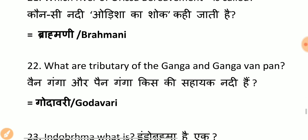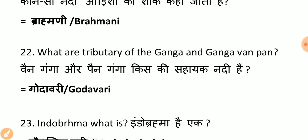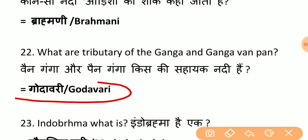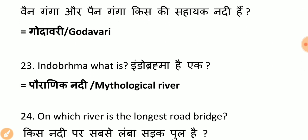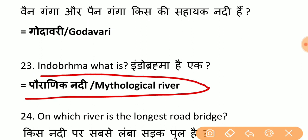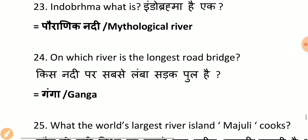What are the tributaries of Ganga? Pen Ganga — which river's tributary is it? Remember: Pen Ganga is a tributary of Godavari. People get confused thinking it may be Ganga's tributary, but it is Godavari's. What is Indobrahma? It is a mythological/ancient river — remember that if Indobrahma is asked, it refers to a mythological river.